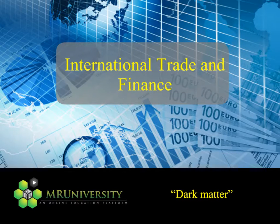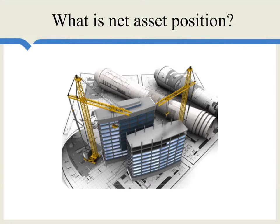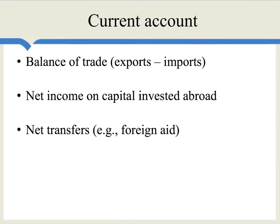Let's consider a claim known as the Dark Matter Hypothesis. It's asking us to revisit the question: what is actually the true net asset position of a country, or what are the true net export earnings or net investment earnings of a nation? This is discussed in the context of the current account, and the Dark Matter Hypothesis is asking whether we are measuring its major components correctly, or whether there might be some hidden assets that some countries hold.